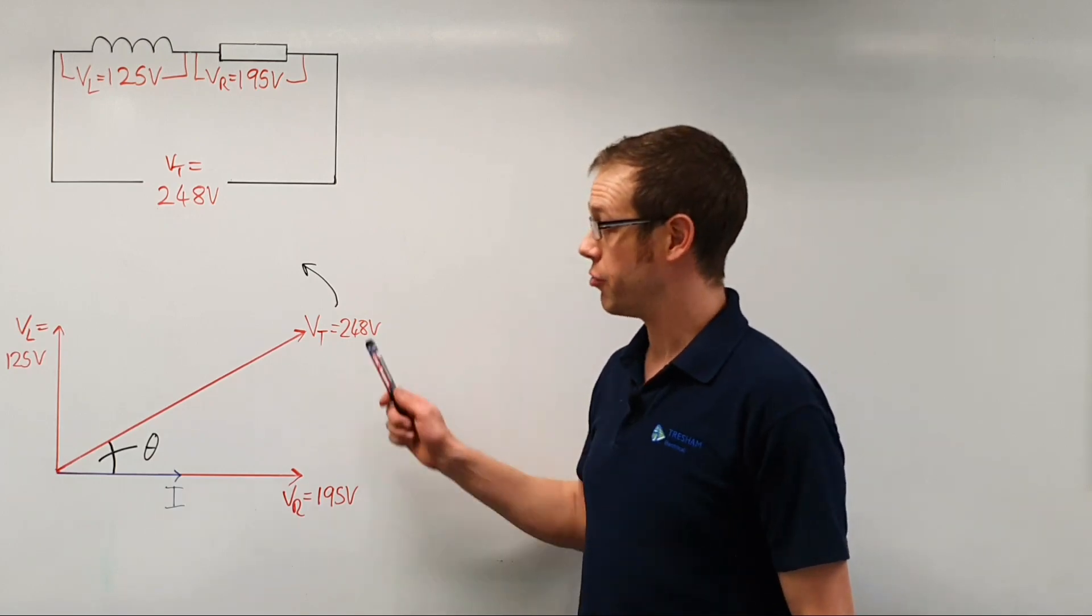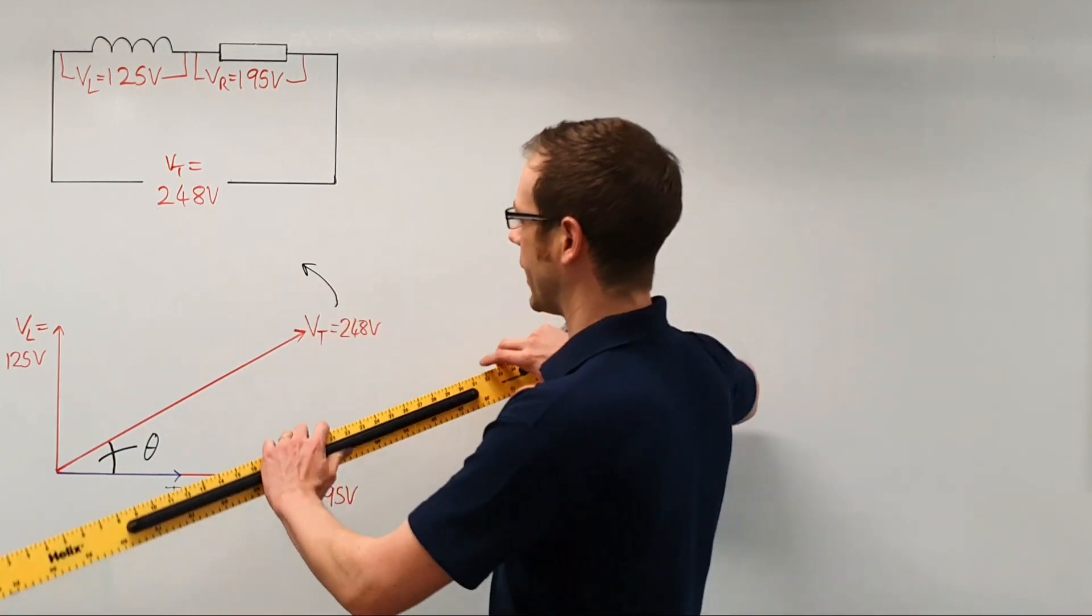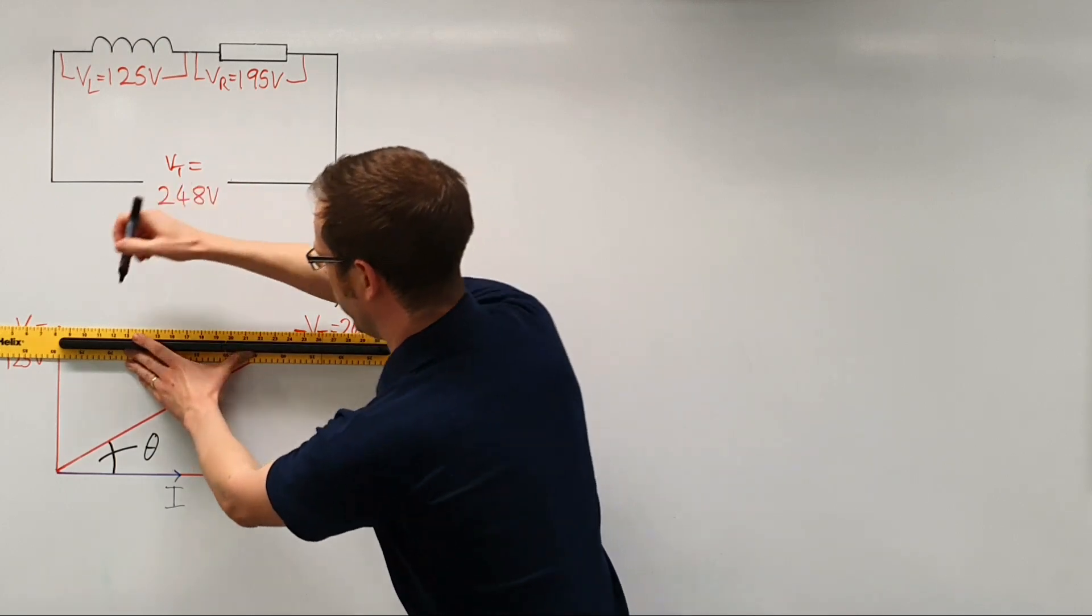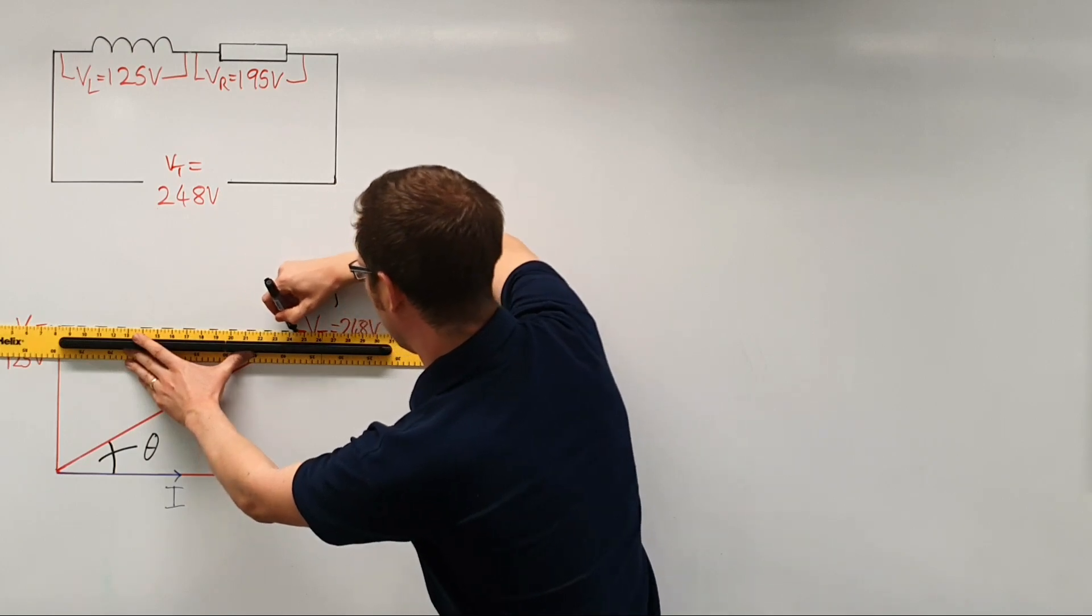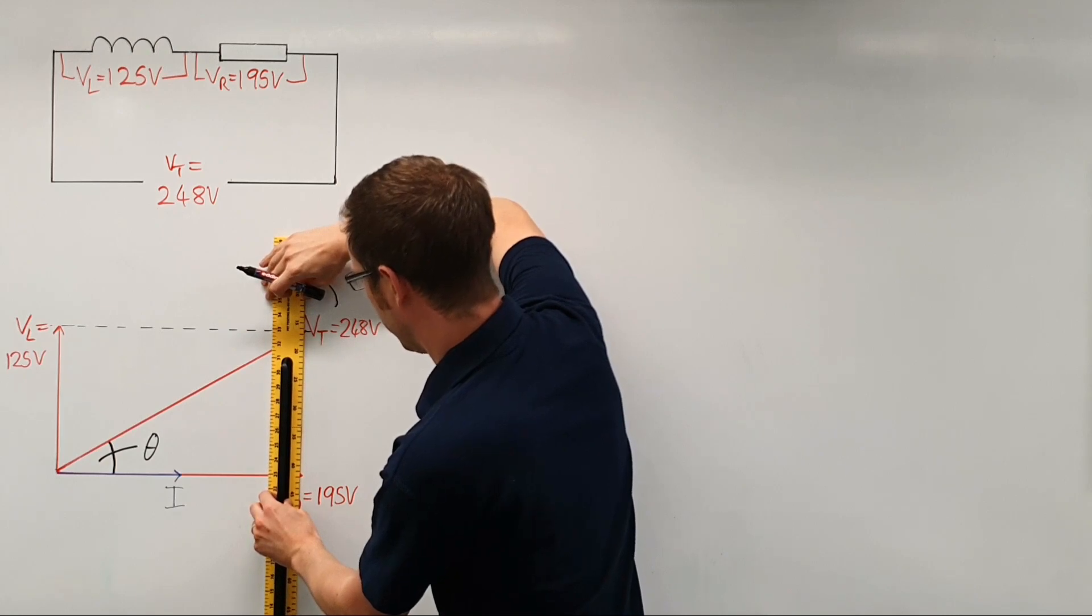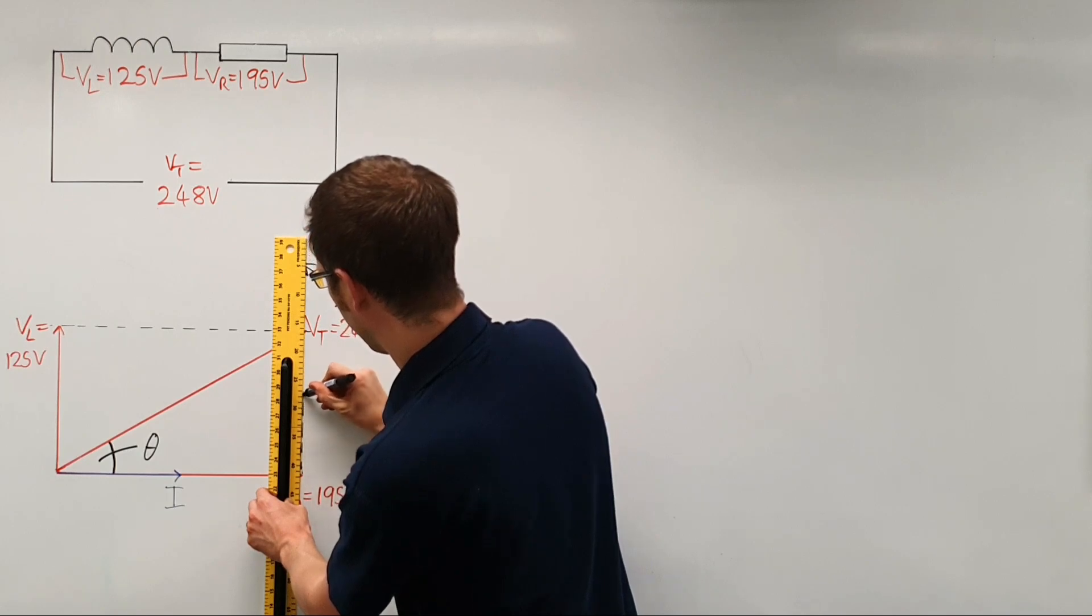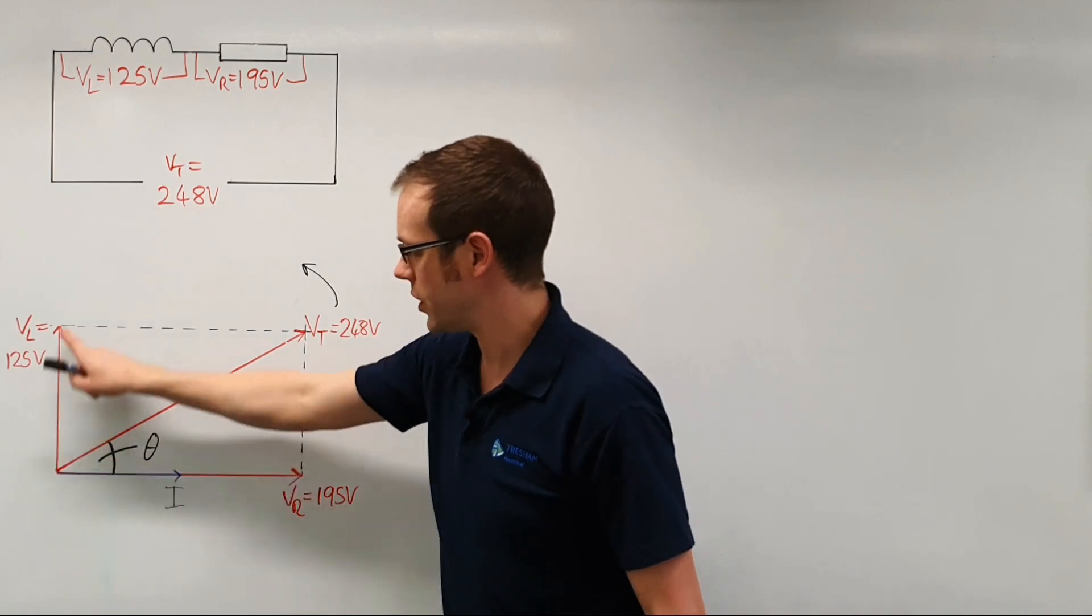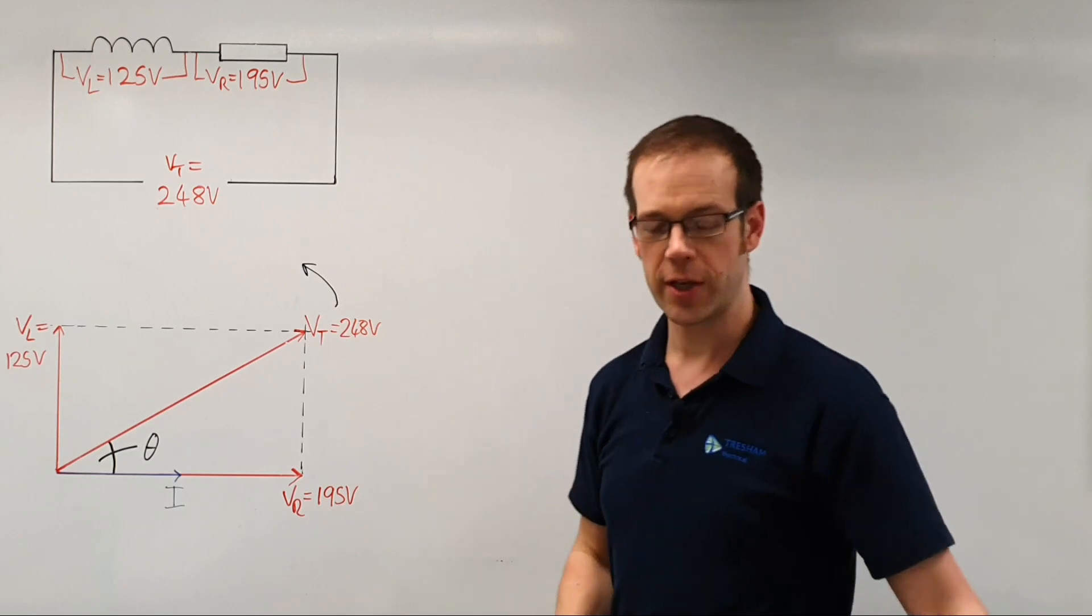When we drew this phasor diagram, we used dashed lines to indicate the relationships between them. We had a dashed line that went parallel to the resistive voltage, and we also had a vertical dashed line that was parallel to the inductive voltage. Where those two lines crossed over, we saw that represented the point at which these two voltages combined, and we could measure off the total voltage from that circuit.